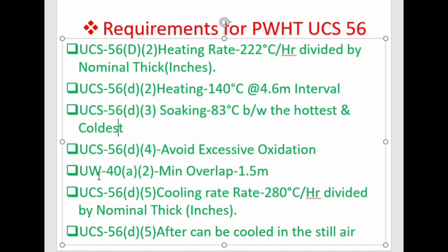The next statement, given in UW-48 D2, is that the minimum overlap is 1.5 meters. If the vessel is too large to accommodate in a single PWHT cycle and requires two cycles, the first portion is heat treated and then the second portion is inserted into the furnace. At that time, at least 1.5 meters of the area previously heat treated shall be present in the area to be heat treated.